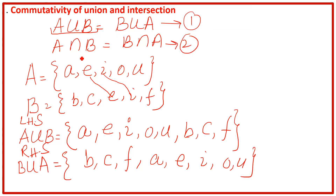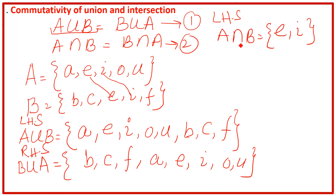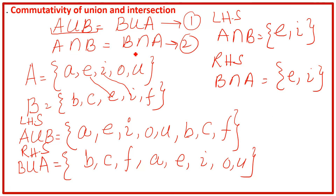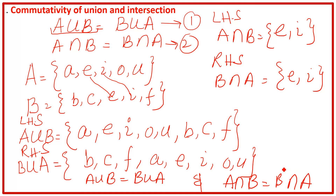Now for the second part: A intersection B. Intersection means common elements, so what is common between A and B? E and I. So A intersection B equals {E, I}. Now the right-hand side, B intersection A: what is common between B and A? Same elements, E and I. So A intersection B equals B intersection A is proved. Both are the same, and this is called the commutativity of union and intersection. Thanks for watching.